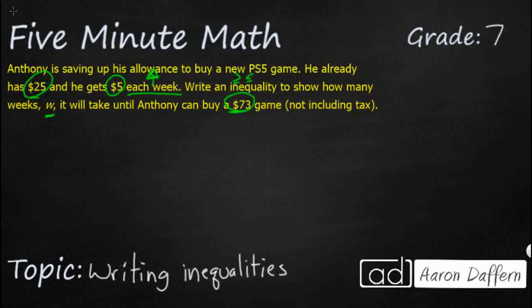So how do we turn this into an inequality? Let's look for a few terms. First, let's look to see what kind of constants we have. Constants are fixed values — numbers that aren't necessarily changing, numbers that are just given to us. So he starts with $25, and we also have the $73 game. Those two are going to be our constants.